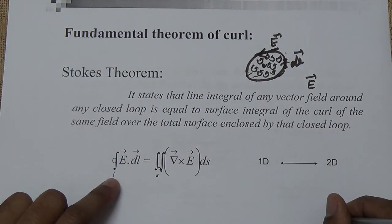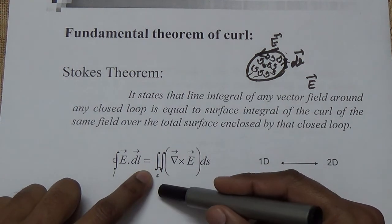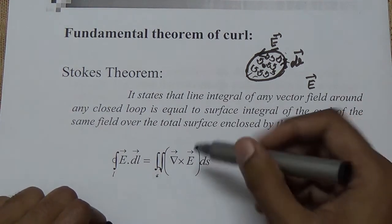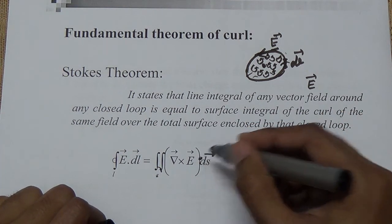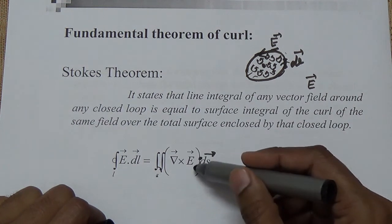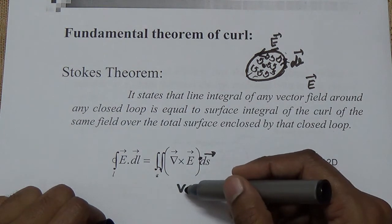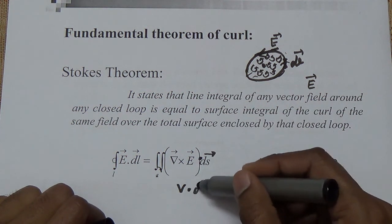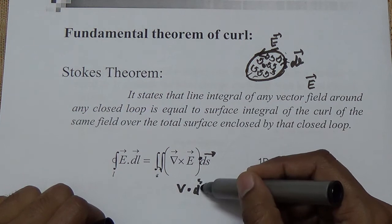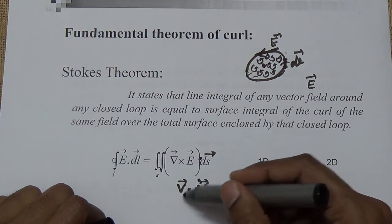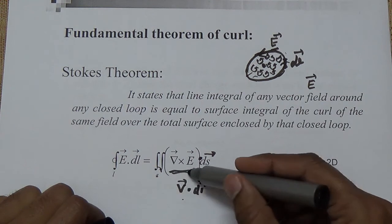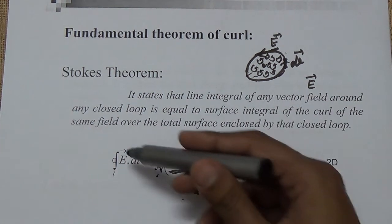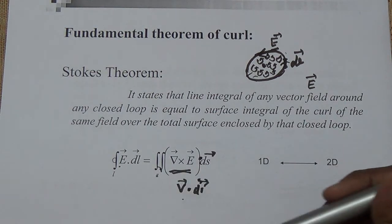So E dot dL equals, in terms of the open surface integral, del cross E dot dS. Since del cross E is a vector quantity and dS is also an area vector, the closed path integral E dot dL is equal to the open surface integral of del cross E dot dS.